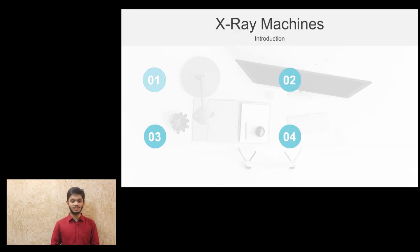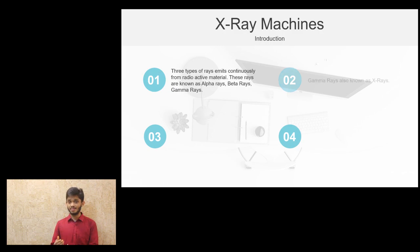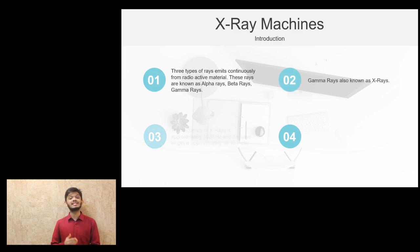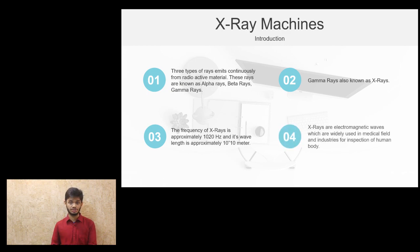So now let's look at some facts. There are three types of rays emitted from a radioactive material, namely Alpha rays, Beta rays and Gamma rays. Gamma rays are also called X-rays. X-rays have a frequency of approximately 10^20 Hz.